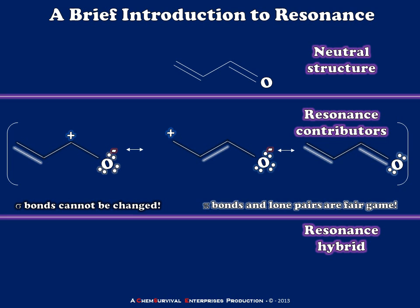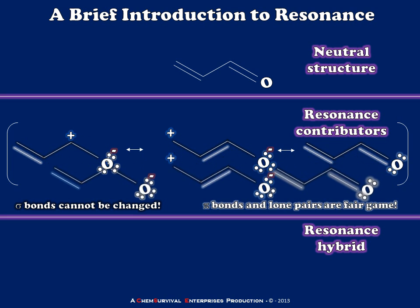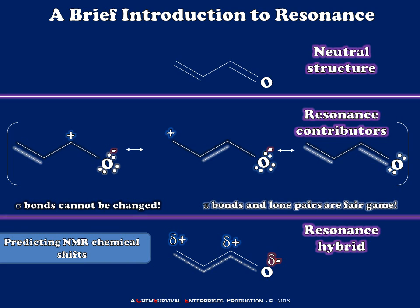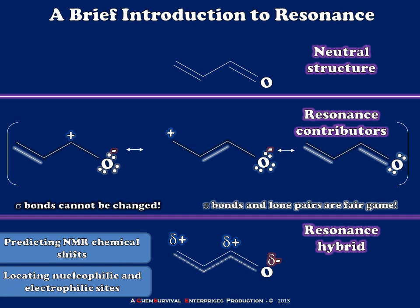To get a good idea of how this molecule will actually behave, we build the resonance hybrid in our heads by recombining these three contributors. In doing so, we can see regions of the molecule with positive charge density and regions with negative charge density. This helps with predicting chemical shifts of protons and carbons in NMR, locating nucleophilic and electrophilic sites, and much more. This is how we go from a neutral structure to resonance contributors and ultimately to a resonance hybrid.